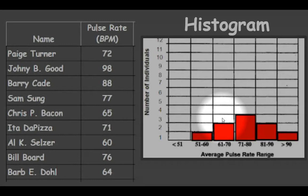So if you look on the data table, Barb E. Dahl is in that range, and so is Crispy Bacon which is 65. So we have two individuals here.